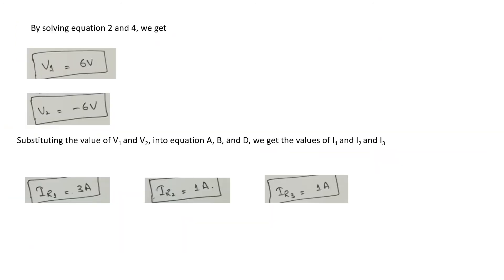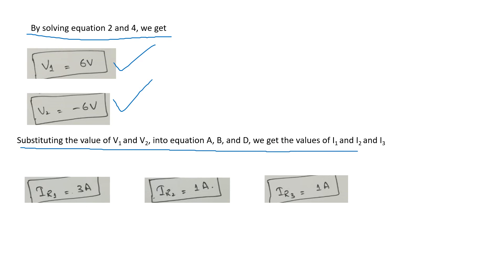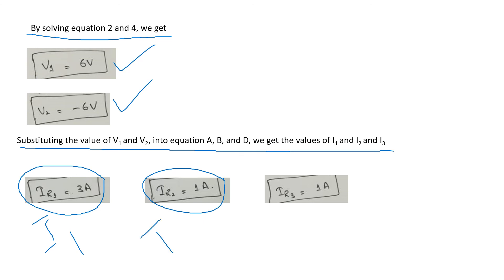By solving equations 2 and 4 using any method you have studied, you will get V1 equal to 6V and V2 equal to minus 6V. Now substituting these values of V1 and V2 into equations A, B, and D, we will get the values of I1, I2, and I3. So IR1 is the current that flows through resistor 1, which equals I1; IR2 is the current through R2, which equals I2; and IR3 is the current through R3, which equals I3. These five values are the required values for this question.